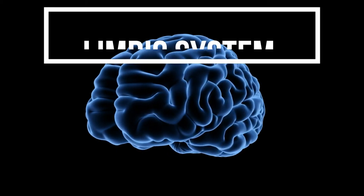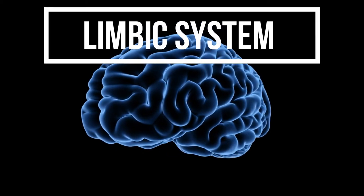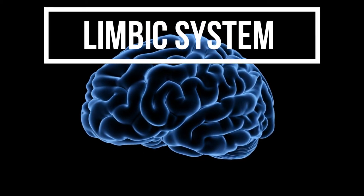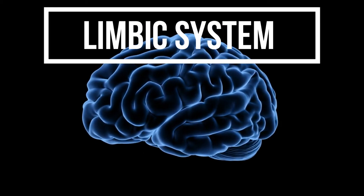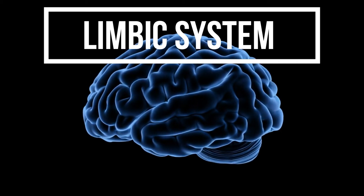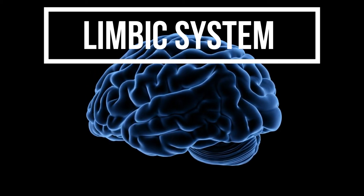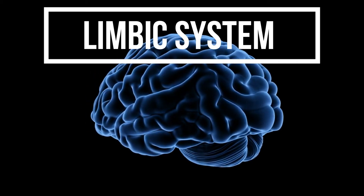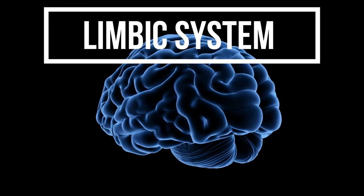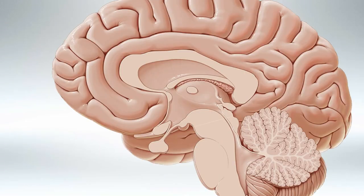Welcome back. In this video, we'll be talking about the different parts that make up the limbic system, and we'll also use a mnemonic to help us understand the functions of the limbic system. We have five main structures that make the limbic system — three of them are present in the middle of the brain and two are present in the temporal lobe.